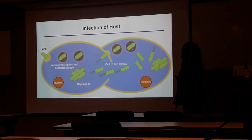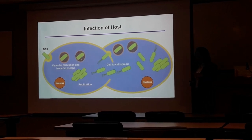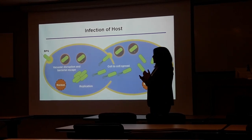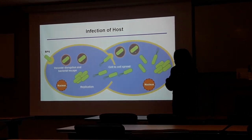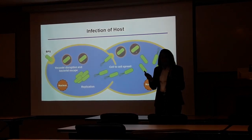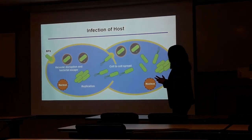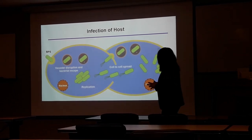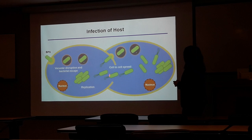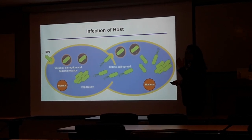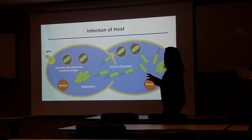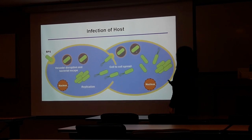At the cellular level, once bacteria is phagocytosed by the host cell, they enter the primary phagosome. During phagosome maturation, different host genes will be activated, including the cytokine systems, leading to bacterial disruption and bacteriolysis. Once bacteria is inside the host cytoplasm, they can use host machinery for replicating infection, leading to cell-to-cell fusion, so that they can spread from one cell to another to establish infection.